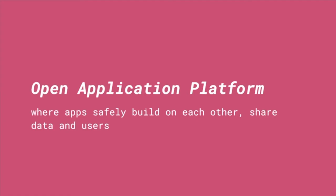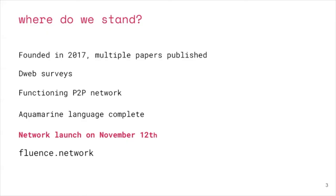Fluence is an open application platform where applications can safely build on each other, share data and users without fear of that access being disabled. That's a critical feature we'll go into in more detail. Founded in 2017, with multiple papers published, some of you may have heard of us through our C-Web surveys, which we've done for a couple of years and have had thousands of developers participate in — a unique way we've built ties in the community.